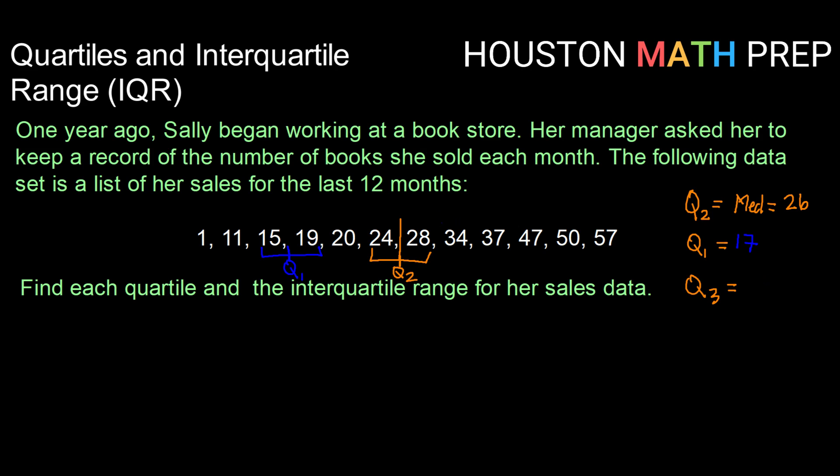Also repeating that for the top part of my data to get q3, that will be 1, 2, 3, 4, 5, 6 values. So half of that is 1, 2, 3. So I'm going to take 37 and 47. Since there are two of them, I need to take their average. q3 will be the average of 37 and 47, which is 42.